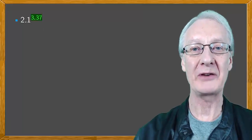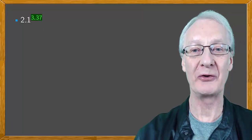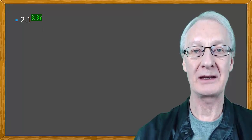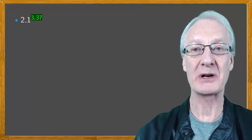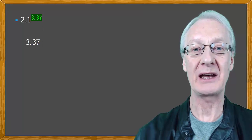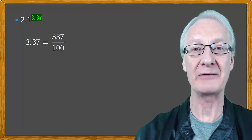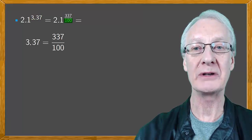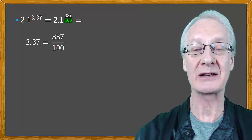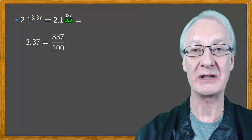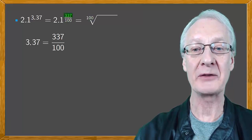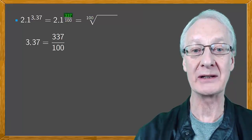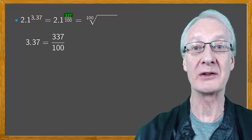Well, if we have an exponent that's in decimal form, then it's straightforward. We express 3.37 as the fraction 337 over 100, so that our power is 2.1 raised to 337 over 100. The 100 in the denominator of the index is the root that we have to take, and the 337 in the numerator is what we have to raise the result to.